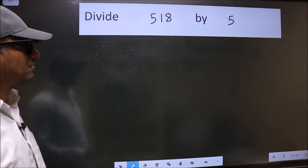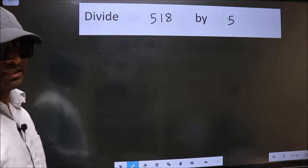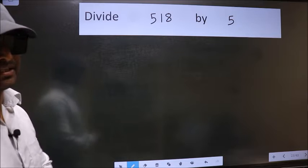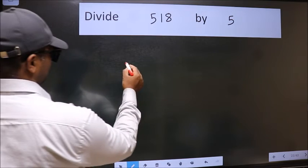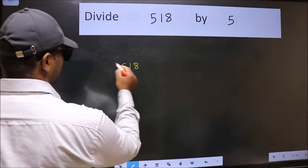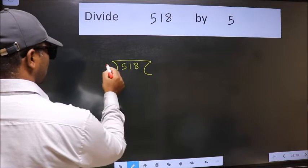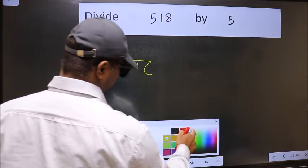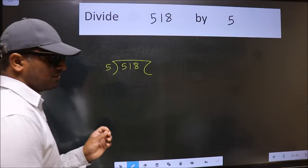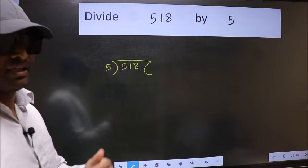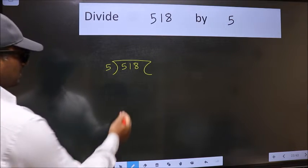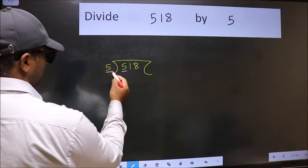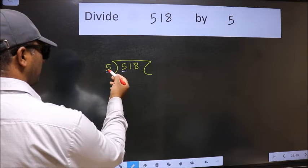To divide 518 by 5, we frame it this way: 518 here and 5 here. This is step 1. Next, we have 5 here and also 5. When do we get 5 in the 5 times table? 5 times 1 equals 5.